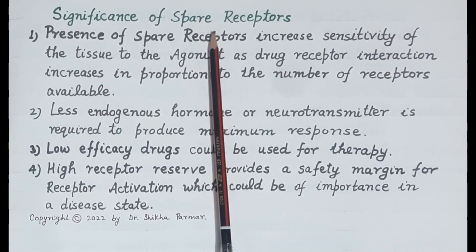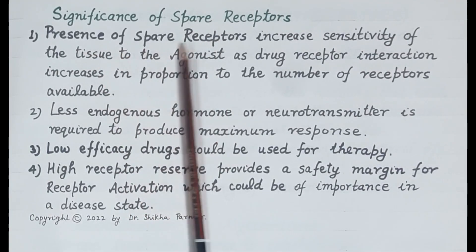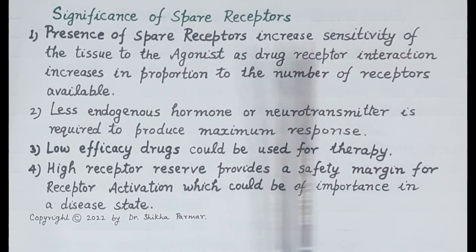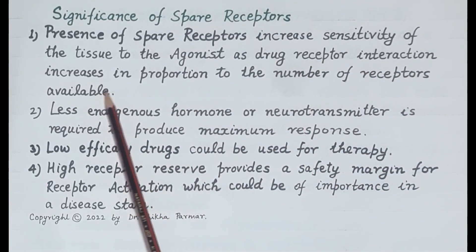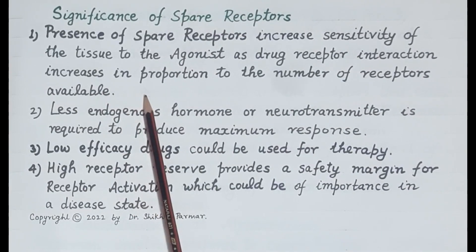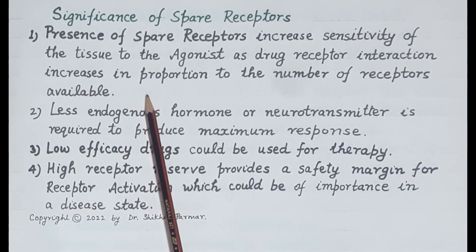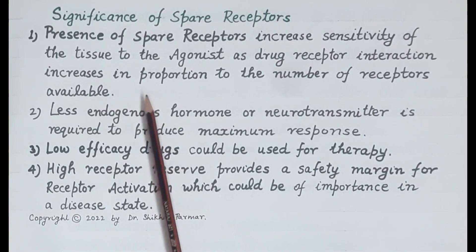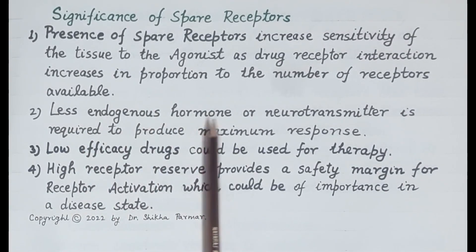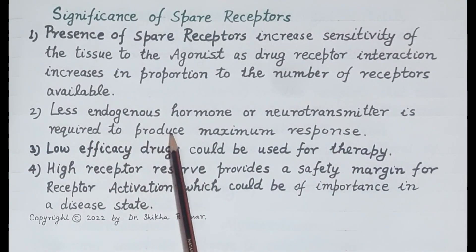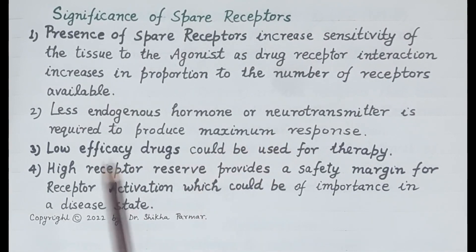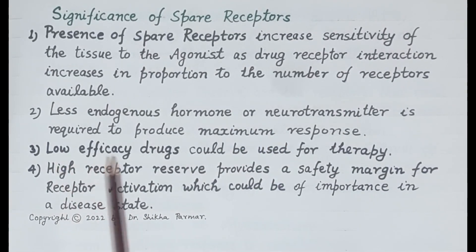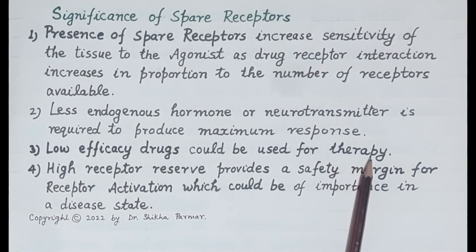Now let's discuss the significance of spare receptors. First, the presence of spare receptors increases sensitivity of the tissue to the agonist, since drug-receptor interaction increases in proportion to the number of receptors available. Second, less endogenous hormone or neurotransmitter is required to produce maximum response, as already seen with acetylcholine at the neuromuscular junction.